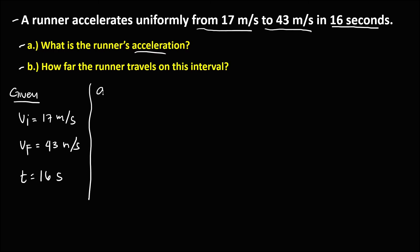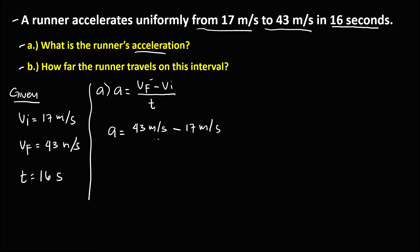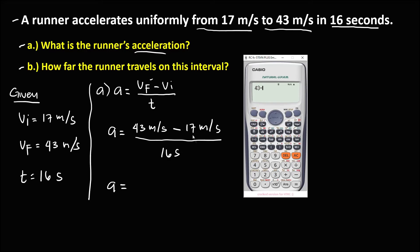To find the acceleration, the formula is: acceleration equals the final velocity minus the initial velocity over the time. So we have acceleration equals 43 meters per second minus 17 meters per second, divided by 16 seconds.